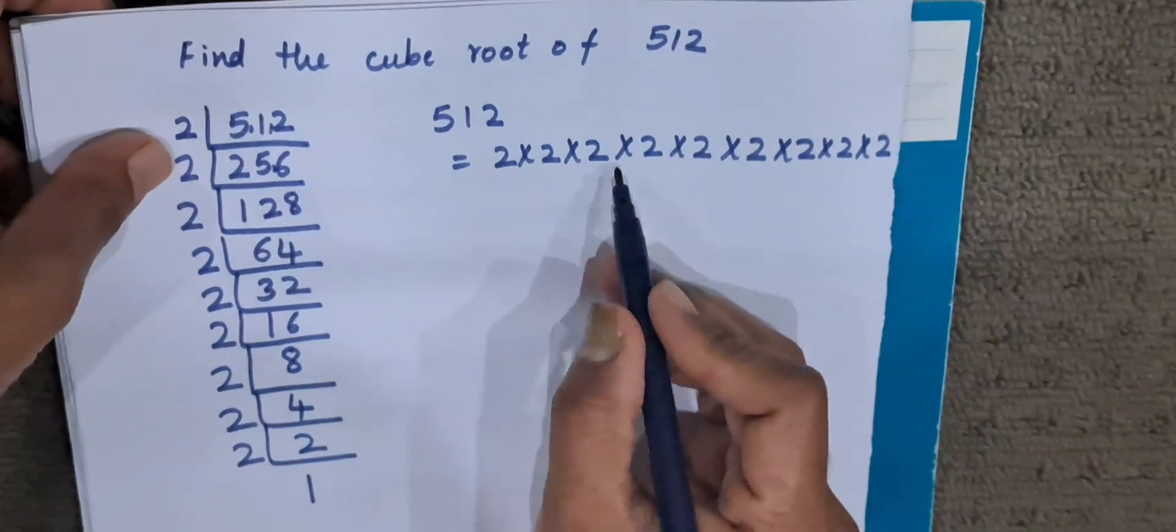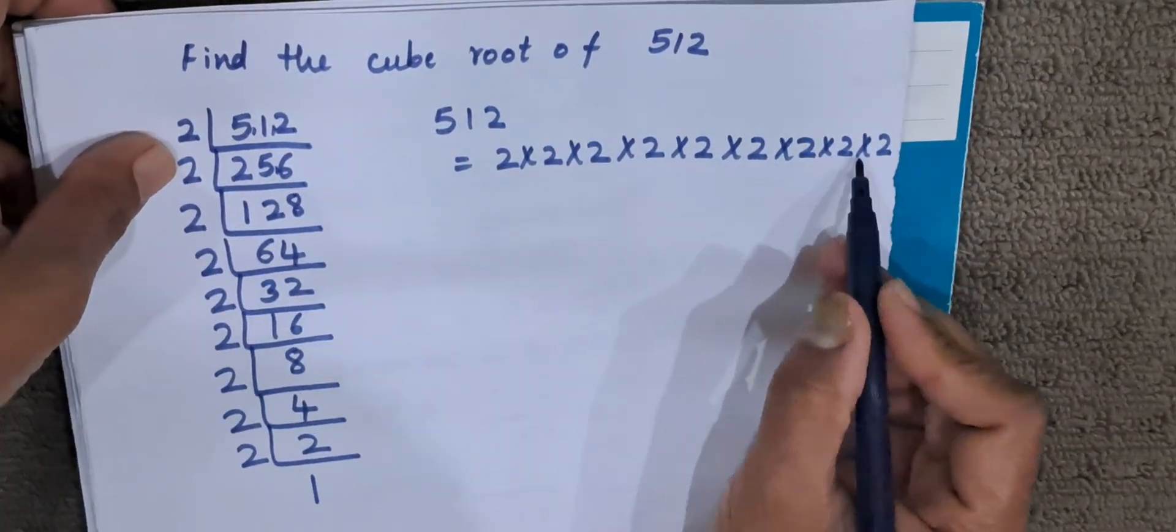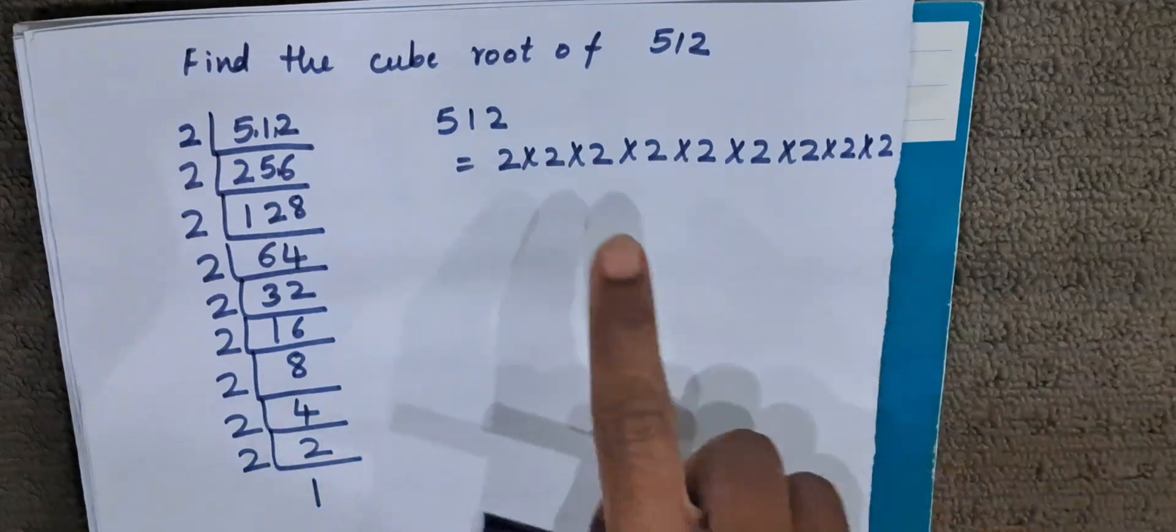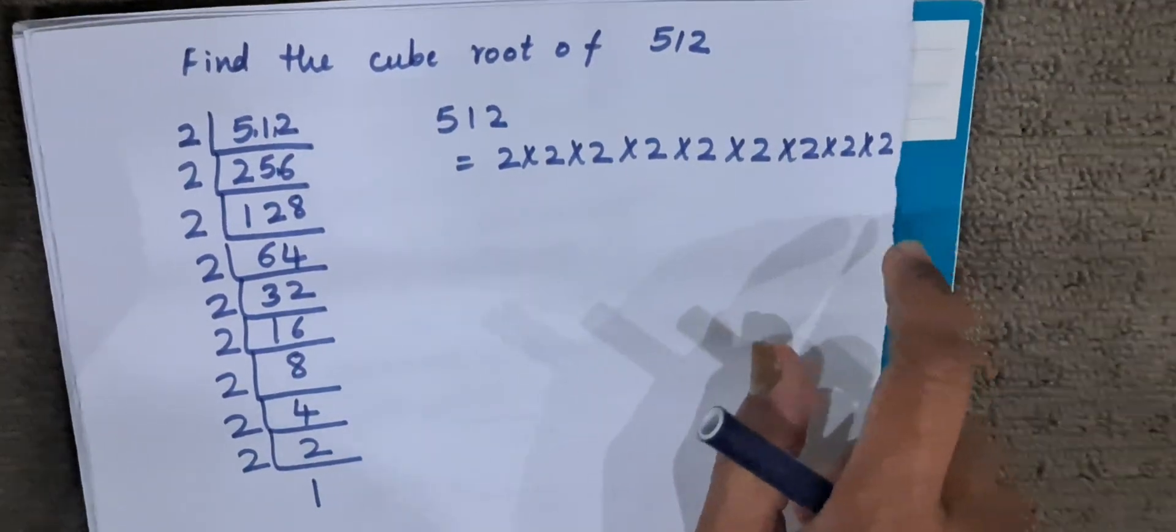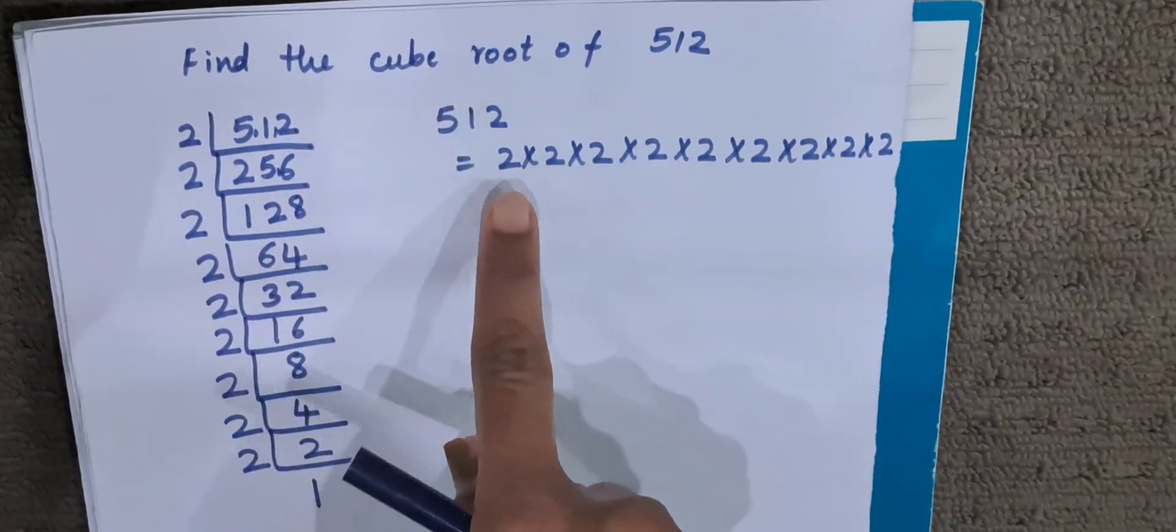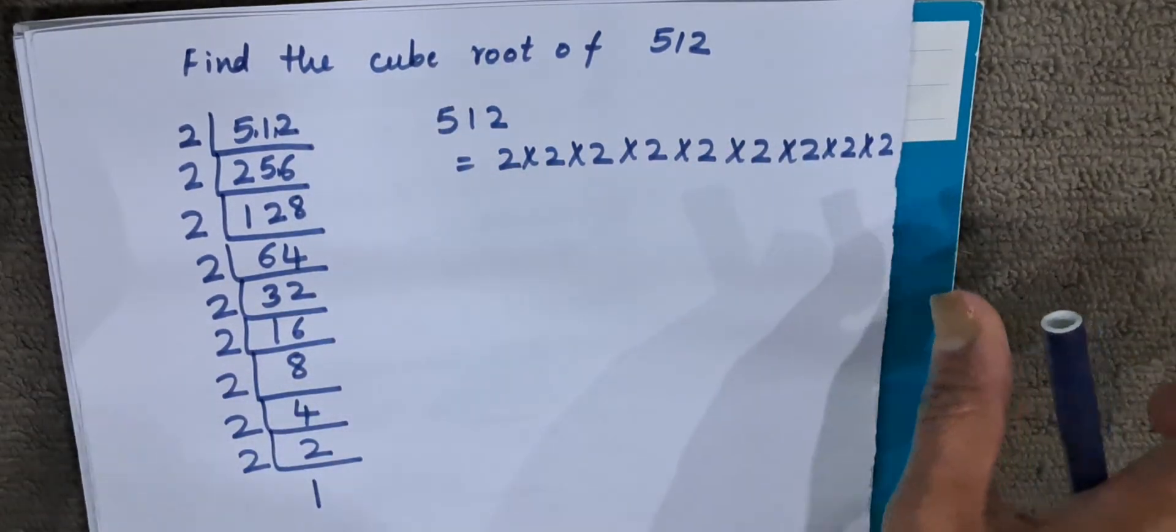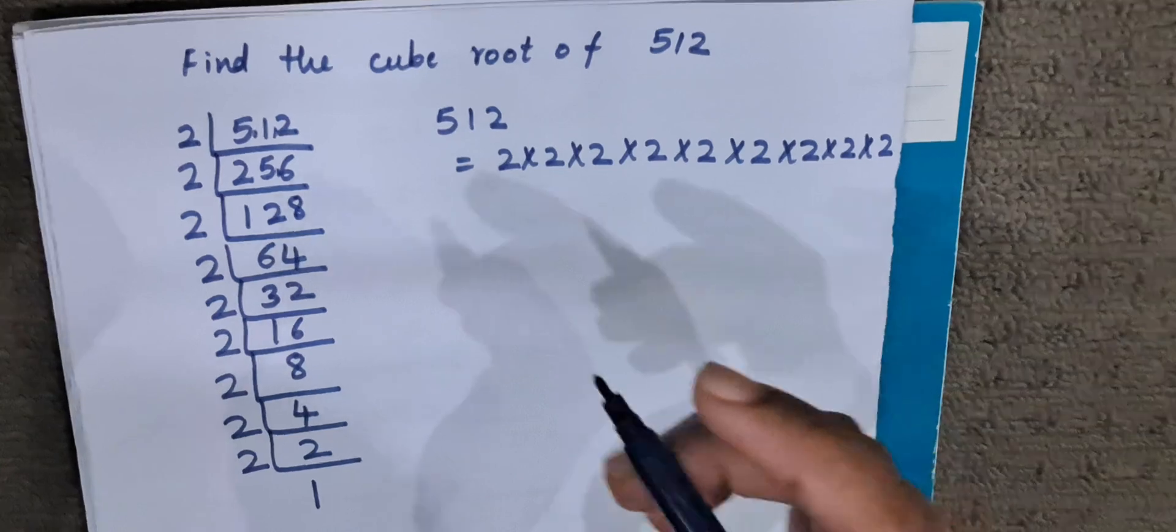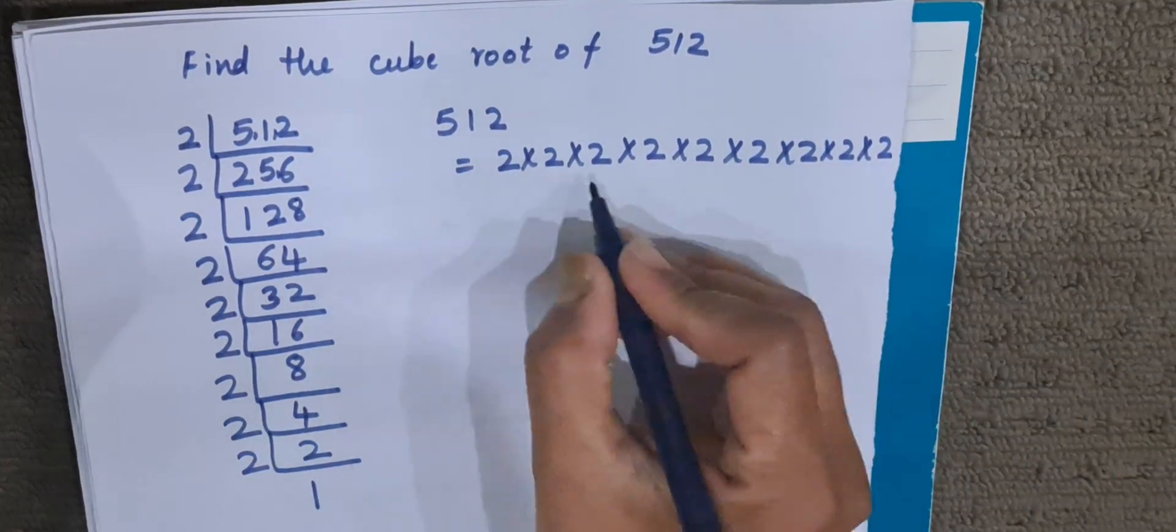So 2 into 2 into 2, 2 into 2 into 2, 2 into 2 into 2. What we will do? 2 is multiplying by itself 9 times. What we have to do here when we are finding the cube root, we have to make a set of 3 multiples of the same number. Now we have all the numbers here are 2.